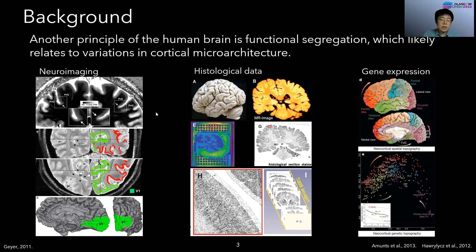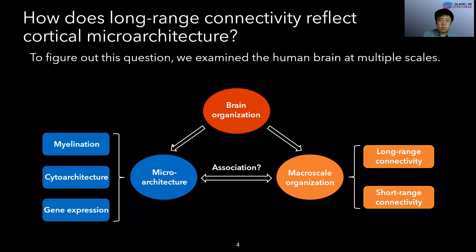Taking advantage of these multi-scale methods, in this work we want to figure out how long-range connectivity reflects critical microarchitecture. To address this question, we examine the human brain at multiple scales, including macroarchitecture and micro-scale organization.